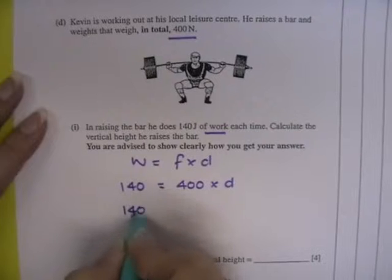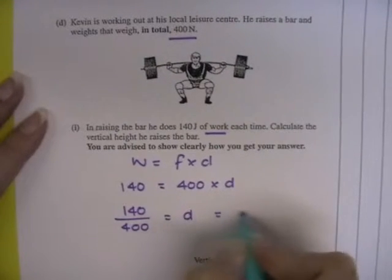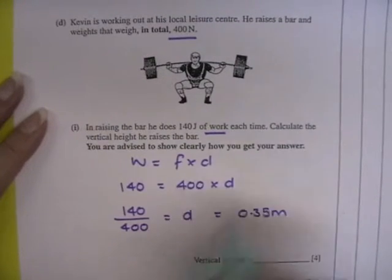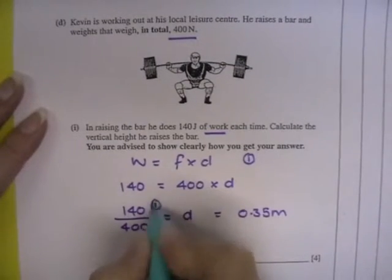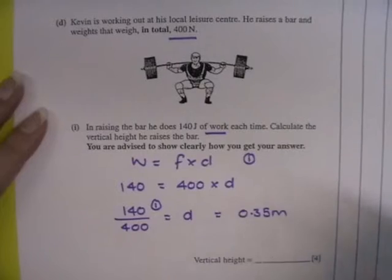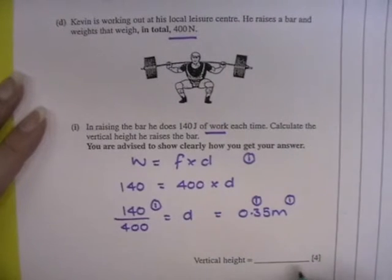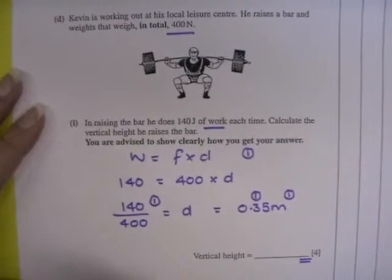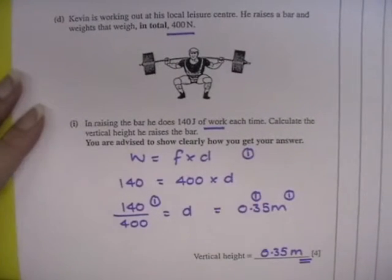So 140 divided by 400 gives you the distance, which is 0.35 metres. Now you would get a mark for actually stating the equation, you get a mark for rearranging it correctly, you then get a mark for the figure, and the final mark is for the units. Because you will notice you are not given the units here in the question. So the answer is 0.35 metres.